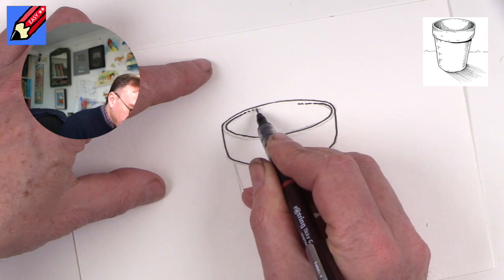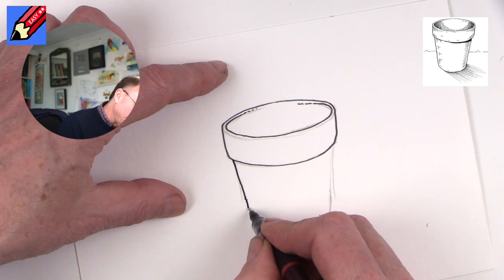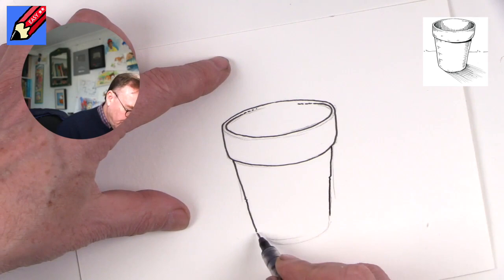Now come down the side, maybe add some little wiggles in there to give it a bit of texture. Make it look a bit older and then join these lines together.